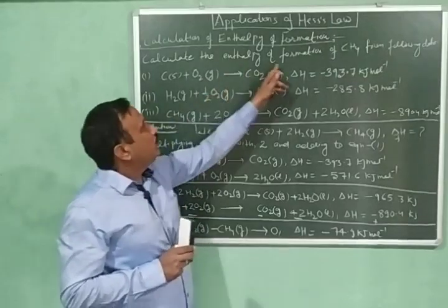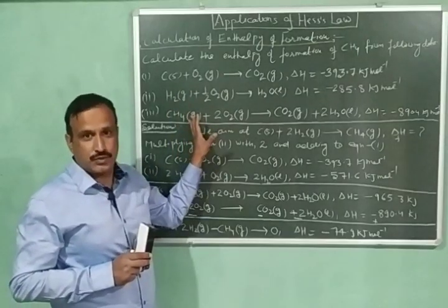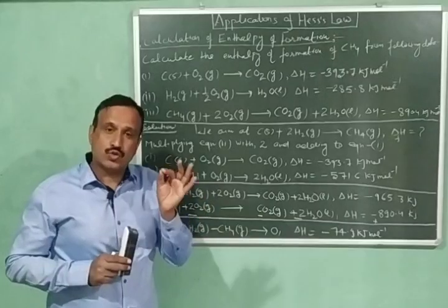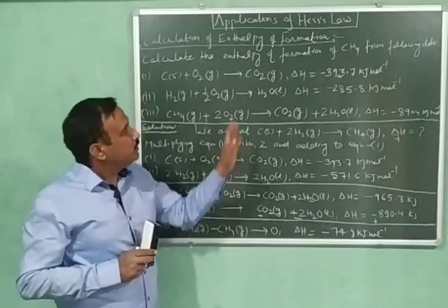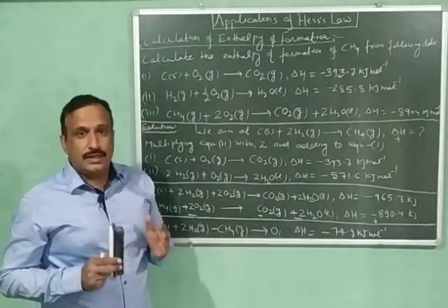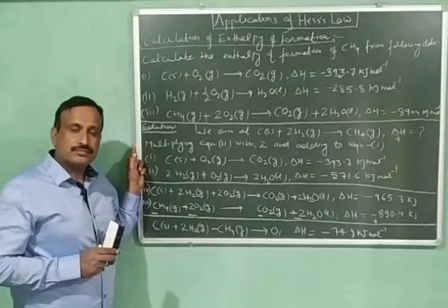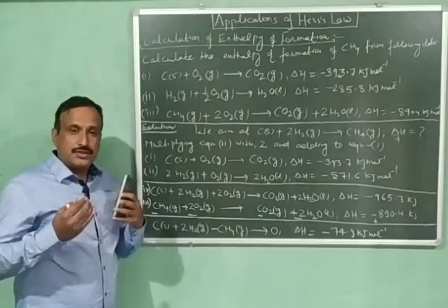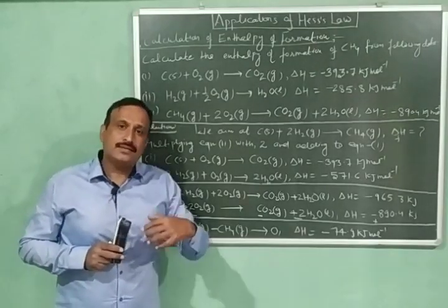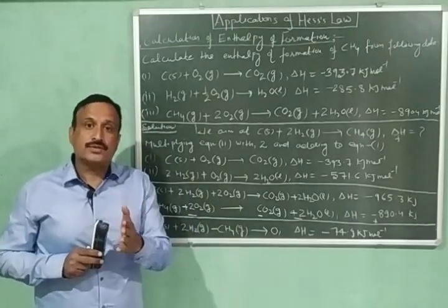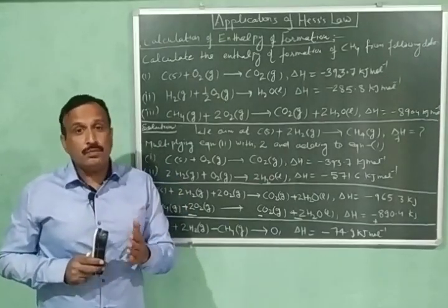We will calculate the enthalpy of formation of methane with the help of these thermochemical equations. A thermochemical equation is a balanced stoichiometric chemical equation in which delta H — that is, the enthalpy change — is also given. We will calculate the enthalpy of formation of methane from these three equations. For this calculation, I would like to define what enthalpy of formation is. The enthalpy of formation of a compound is the enthalpy change — the heat evolved or absorbed — when one mole of a compound is formed from its elements.